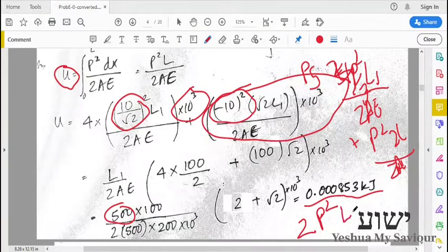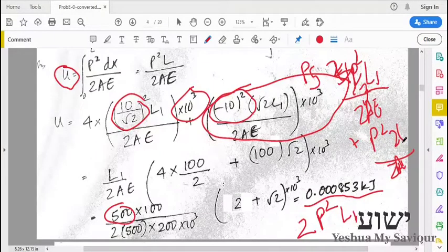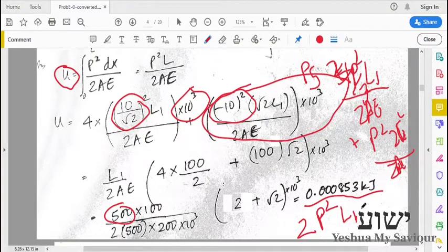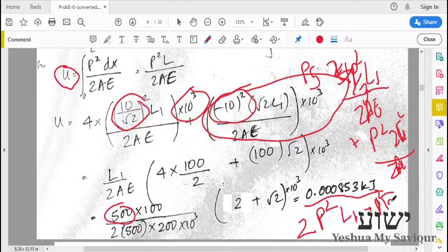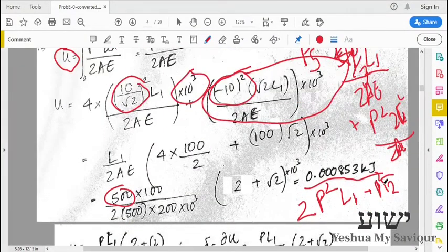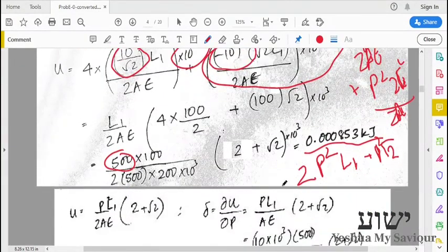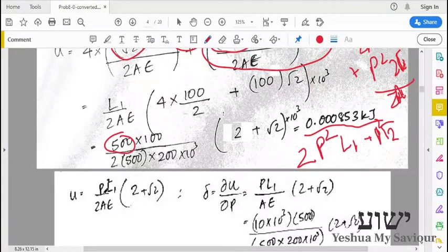P² L1 and these are √2 plus P² into √2. We can take P² out, so we will be left with P²L1/(2AE) times (2 + √2). Obviously we are taking P² times (2 + √2).